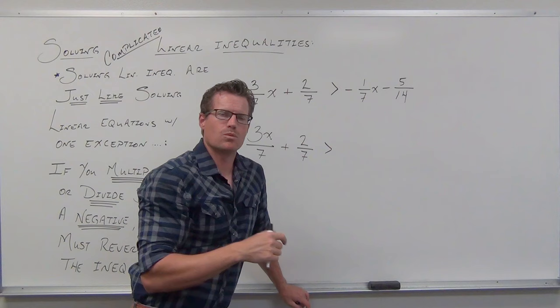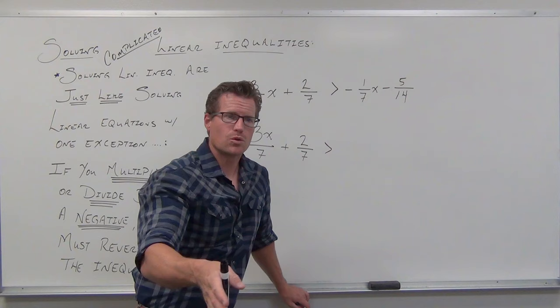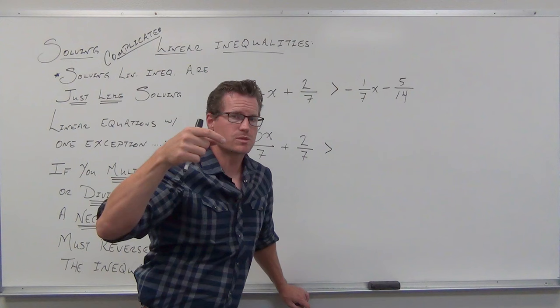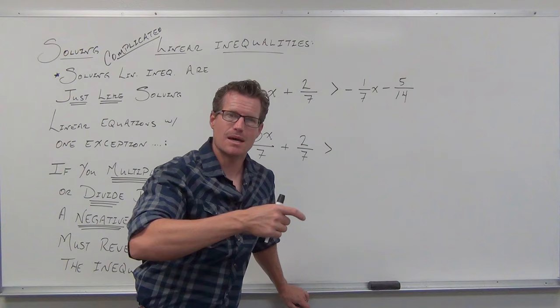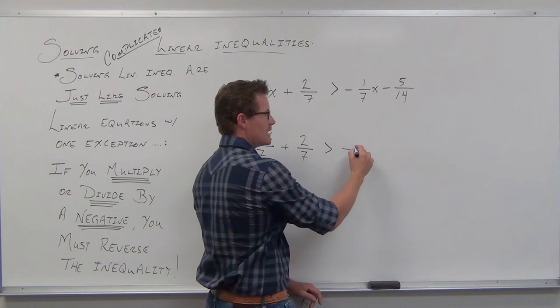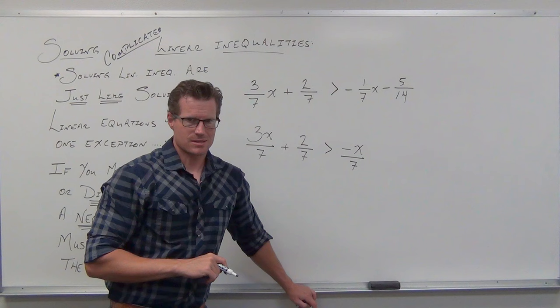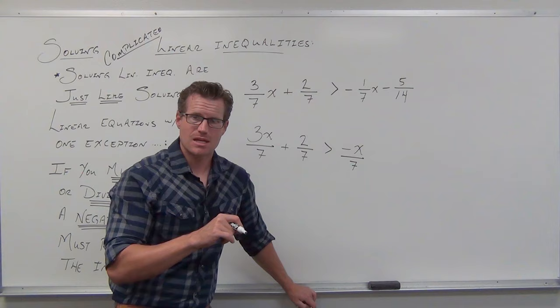Here's what's cool about this: when I told you to float negatives up to the numerator, it's so that your denominator is always positive. The reason that's important is you'll never have to multiply by a negative to get rid of your denominator. That means you don't have to worry about reversing your inequality. So when we write this as a fraction, make sure the negative floats up to the numerator — instead of negative one-seventh x, we get negative x over 7. Notice my denominator is positive. When we multiply by the LCD, we're not going to be multiplying by a negative.